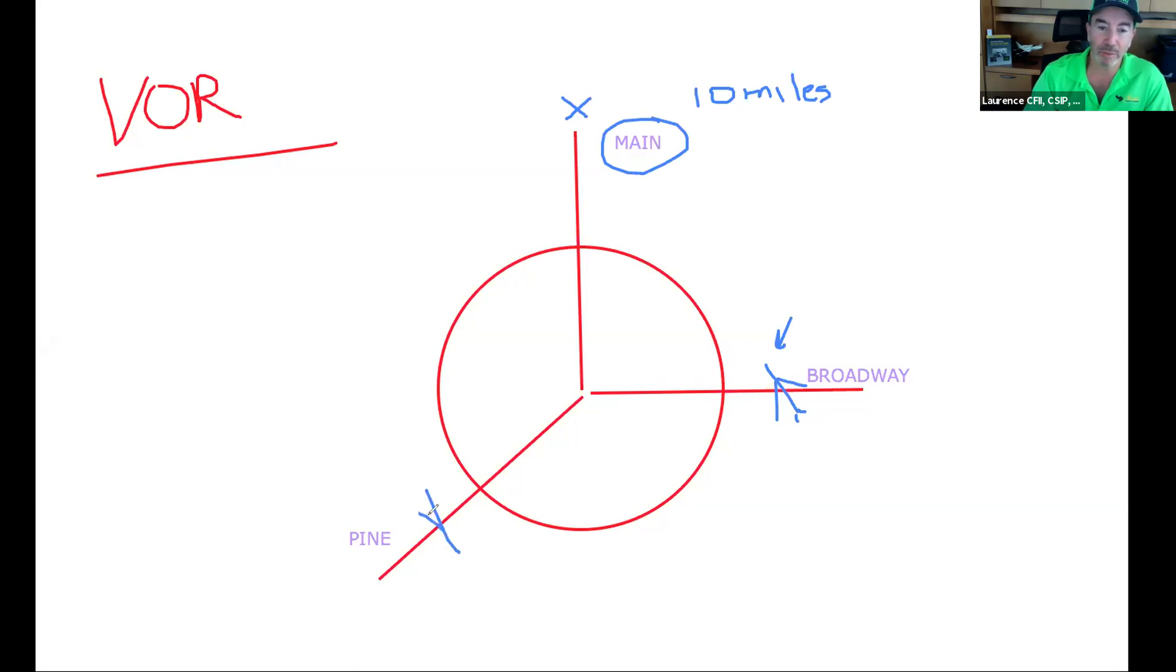And then finally, aircraft is pointed in this direction. What radial is he crossing? Pine. Exactly. So now, here's where the magic happens. Change these to numbers. And that's the 360 radial and the 090 radial. And let's just call this one for fun, the 210 radial.